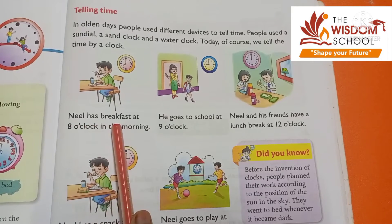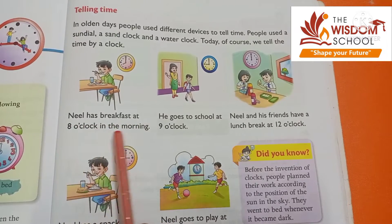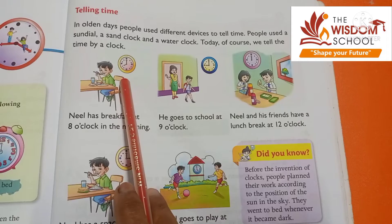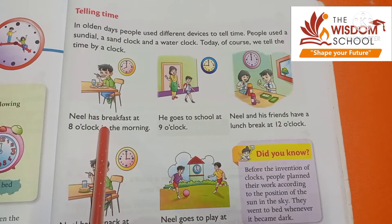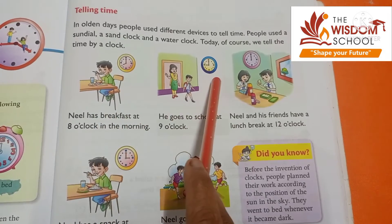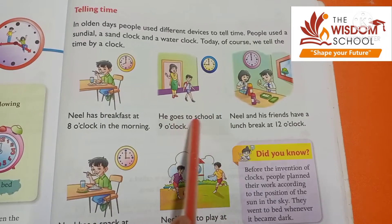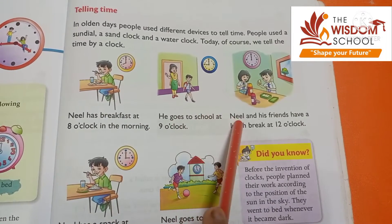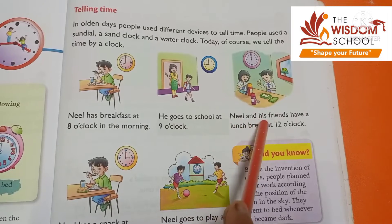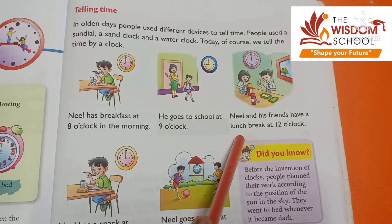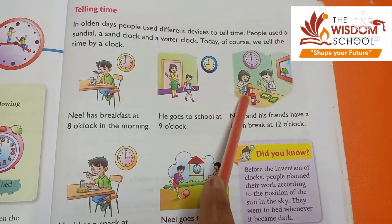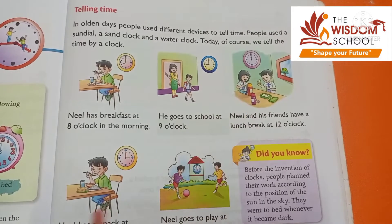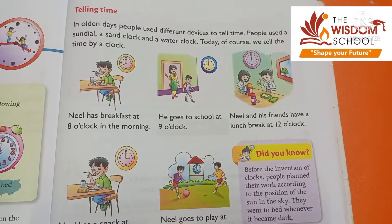Neil has breakfast at 8 o'clock in the morning. At 9 o'clock he goes to school. Neil and his friends have a lunch break at 12 o'clock. Neil has a snack at 3 o'clock in the afternoon.